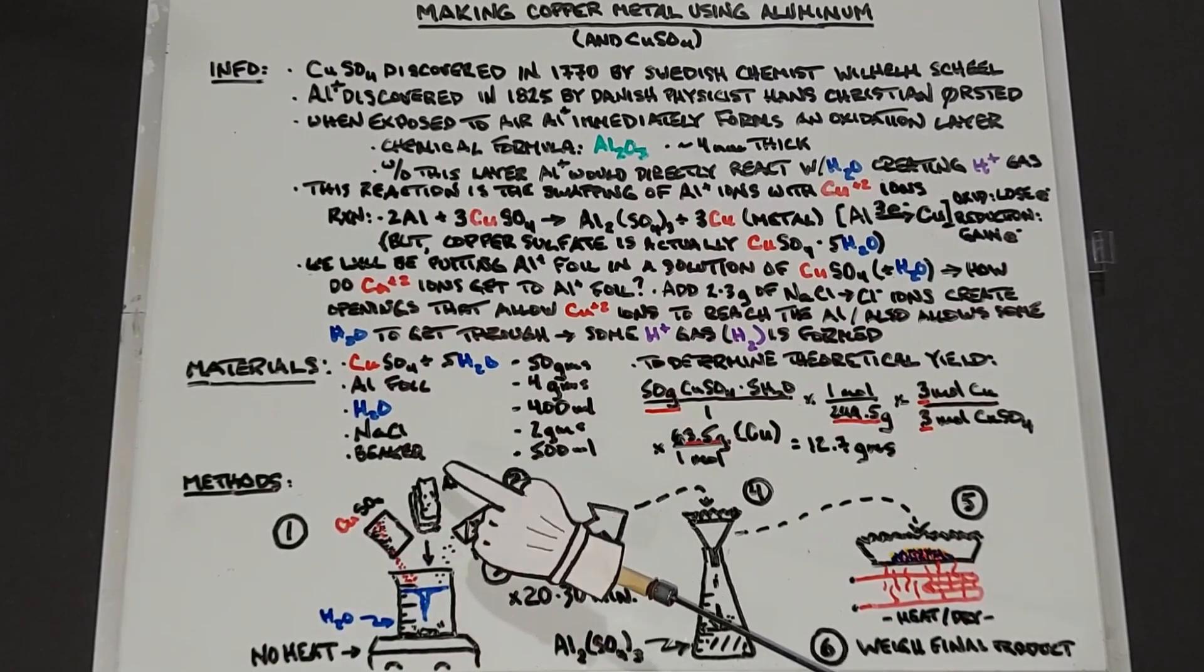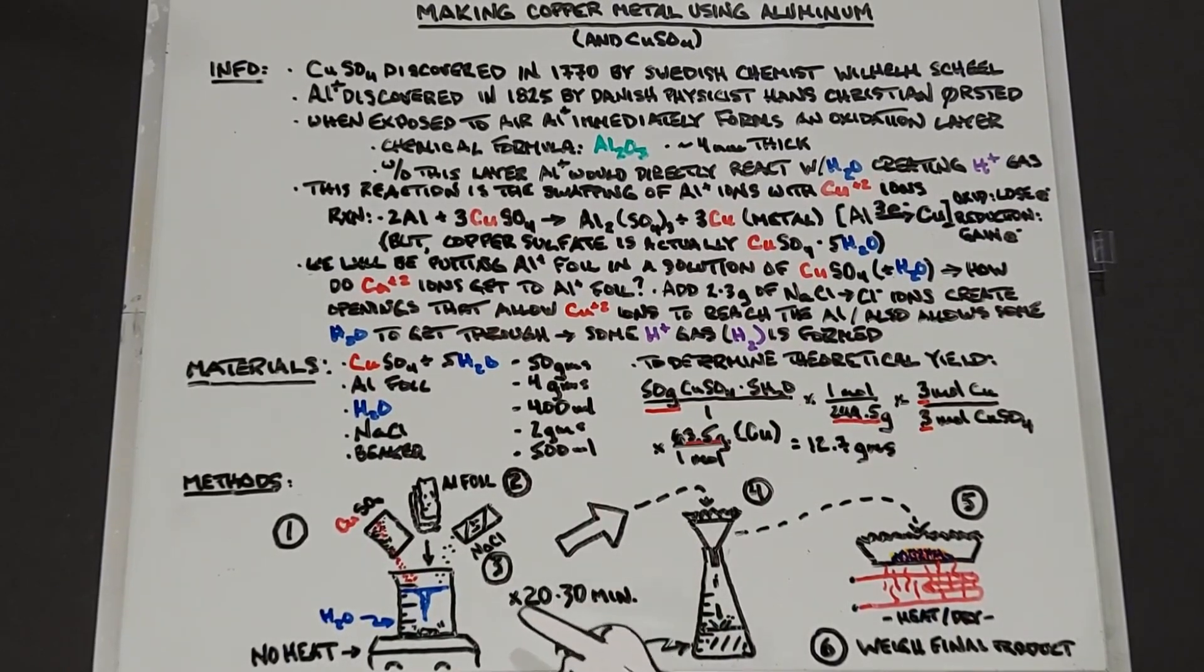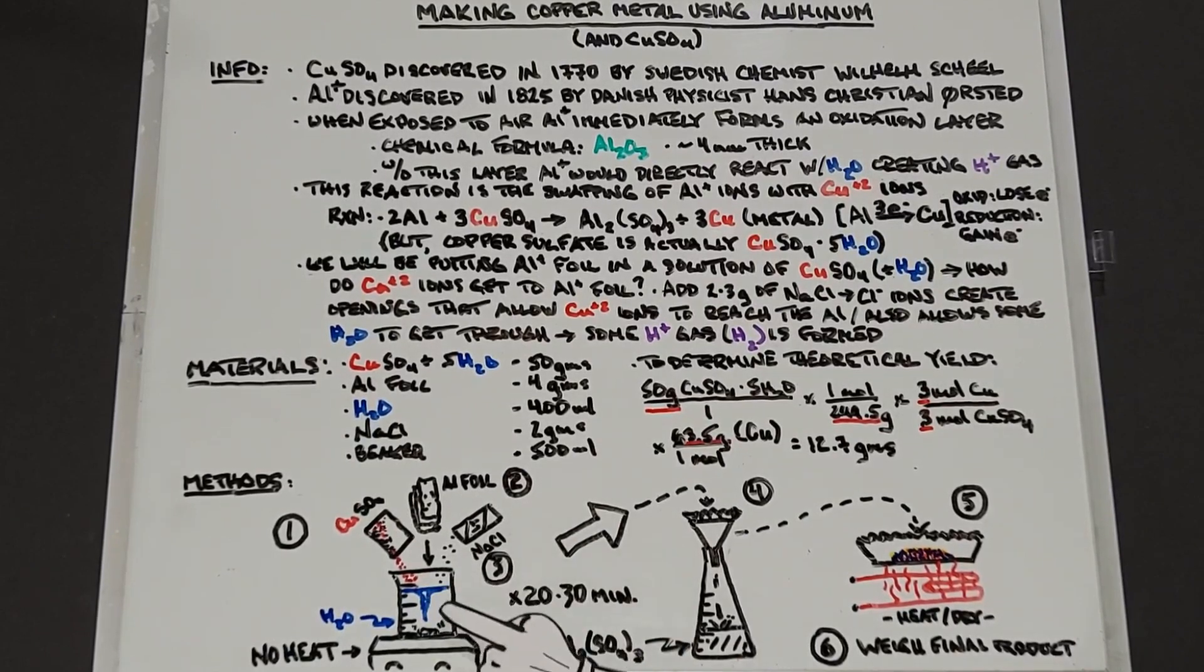Secondly we're going to add our aluminum foil in there, which will do absolutely nothing until we add our little pinch of salt, two to three grams. At that point you'll start to see some hydrogen bubbles formed, and you will start to see small bits of copper forming on the aluminum foil. After 20 to 30 minutes most of this should have reacted, and this will look like a really muddy mess because the copper that's formed are little tiny pieces.